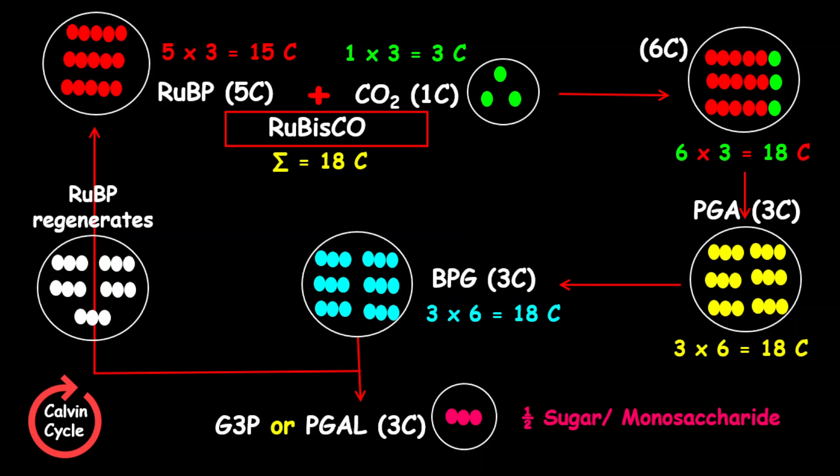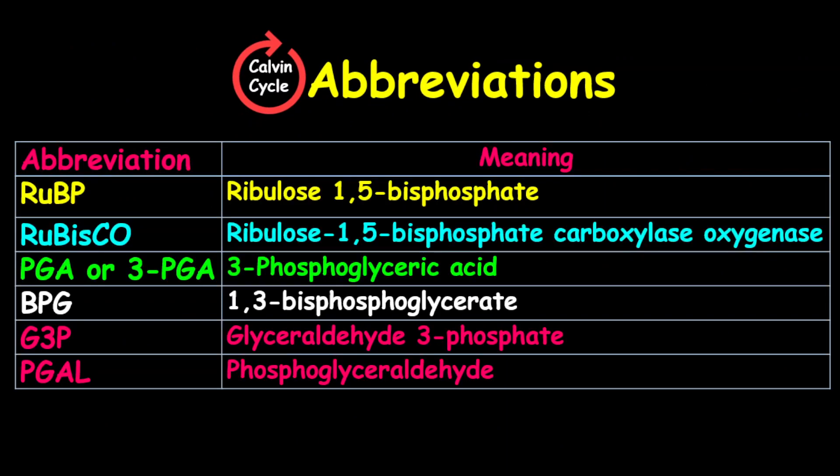Now, let's take a quick look at the abbreviations used throughout the cycle. RuBP is ribulose 1,5-bisphosphate. Rubisco is ribulose 1,5-bisphosphate carboxylase oxygenase. PGA, or formerly 3-PGA, is 3-phosphoglyceric acid.